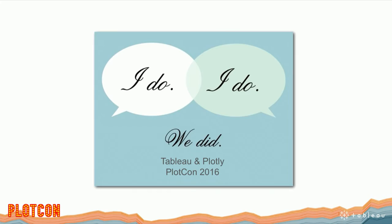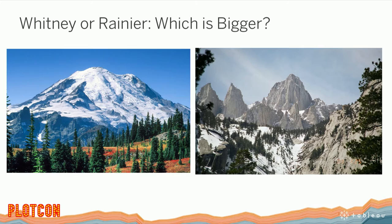So there are these two tools, each with their individual strengths. I know Tableau really well, Matt knows Plotly really well, and we thought: why don't we introduce our friends? We introduced our friends and found a way for them to get married. Let me introduce the example we're going to play with right now. Question for you all - Mount Whitney in California or Mount Rainier in Washington: which one's bigger?